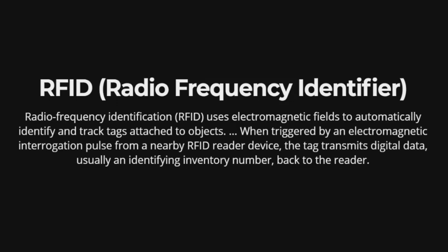RFID (Radio Frequency Identification) uses electromagnetic fields to automatically identify and track tags attached to objects. When triggered by an electromagnetic interrogation pulse from a nearby RFID reader device, the tag transmits digital data — usually an identifying inventory number — back to the reader.